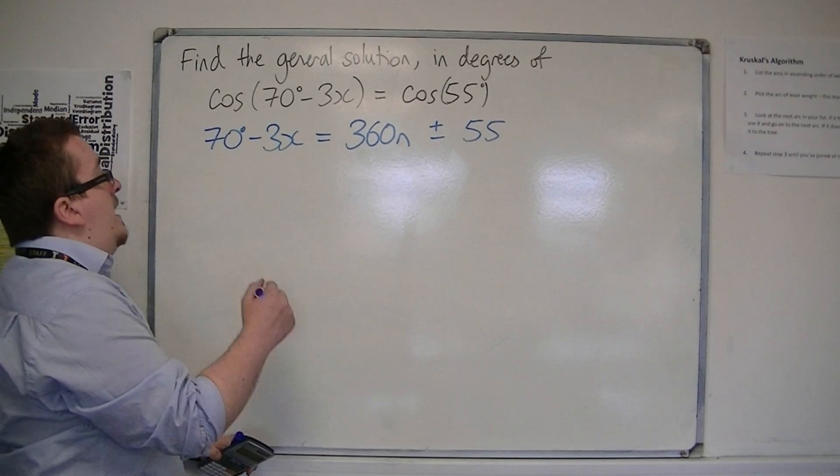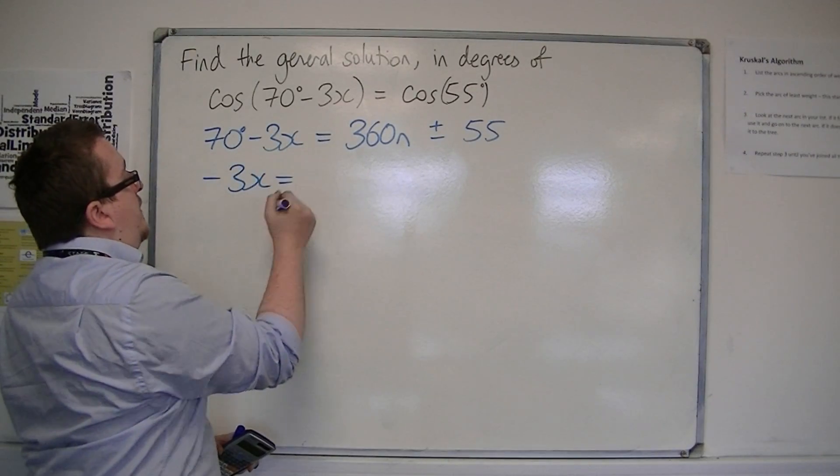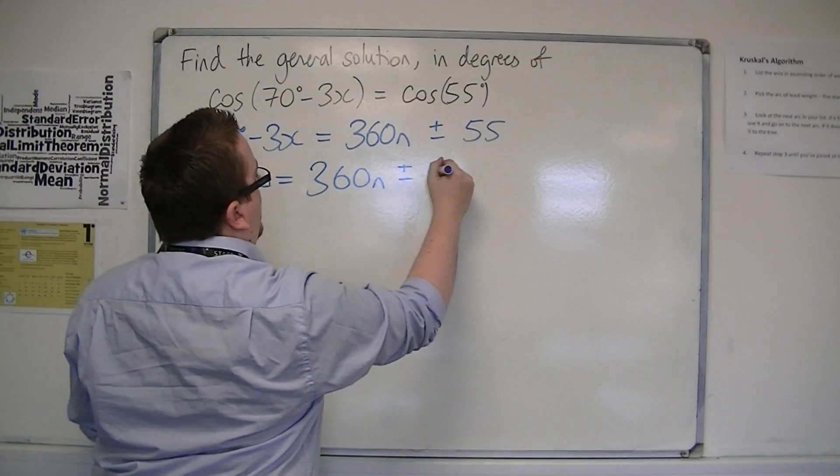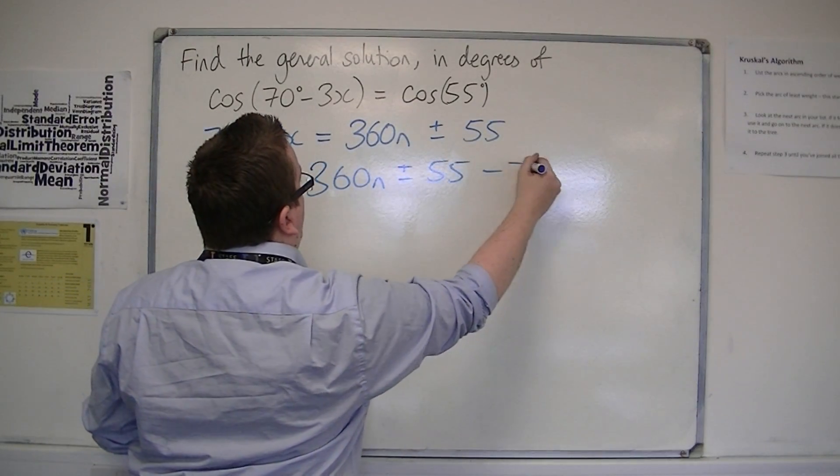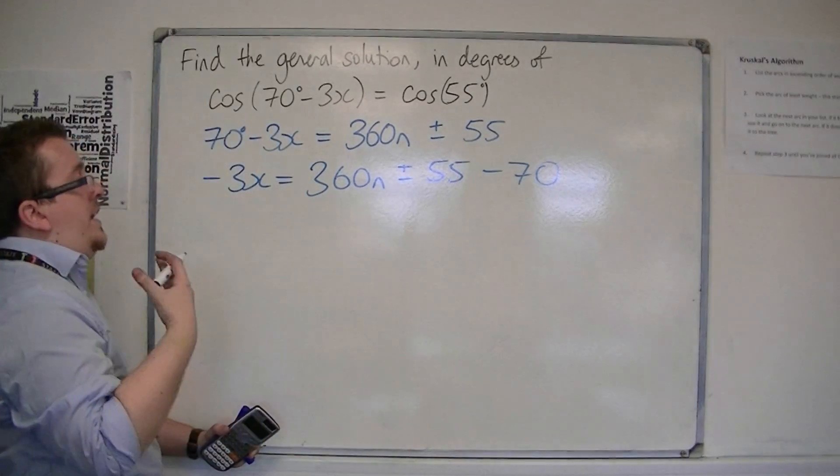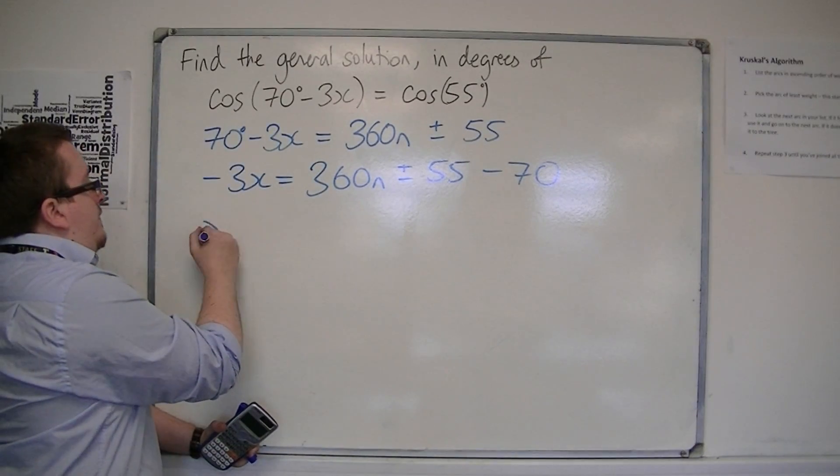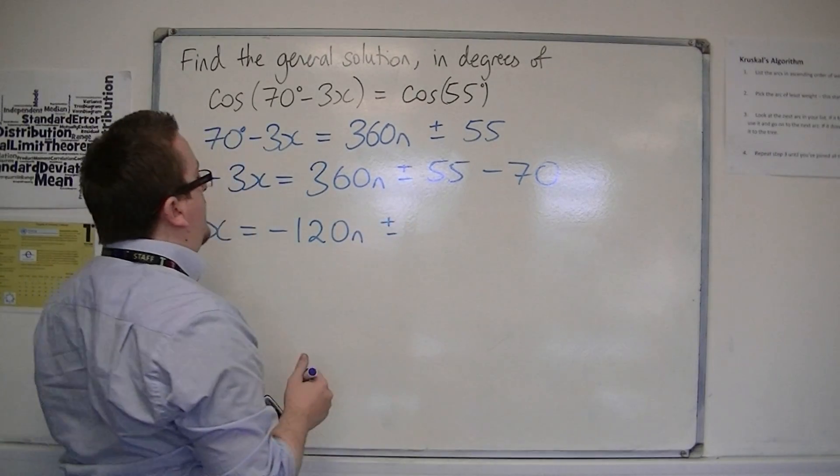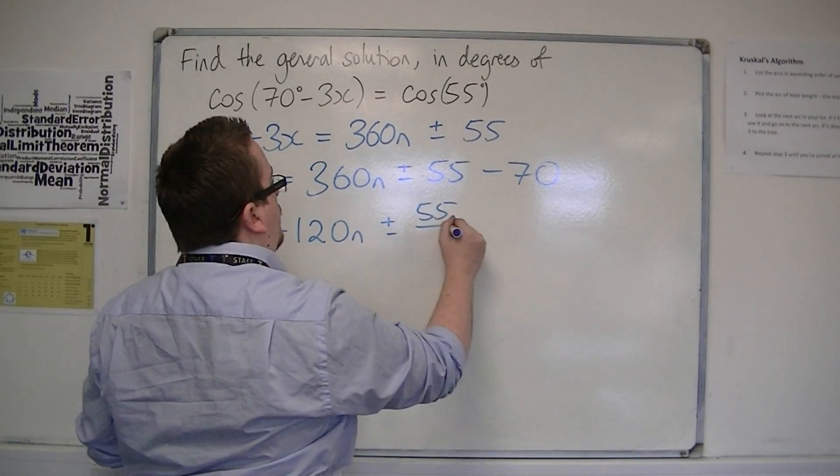So then you can take 70 from both sides. I'm going to leave the plus or minus 55 there. And then divide through by minus 3. So we're going to get -120n, plus or minus 55/3.